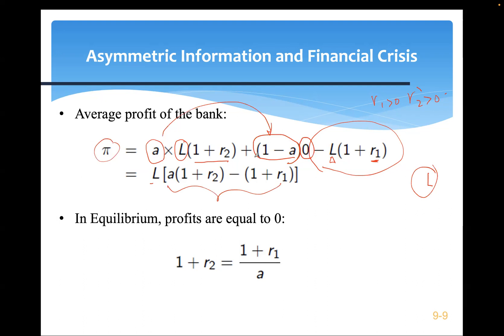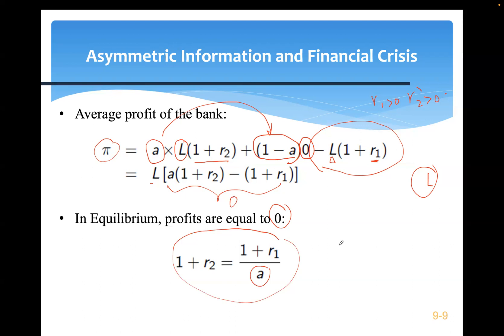If profit is positive, more banks will enter; if negative, banks will leave. This entry and exit drives profit to zero. Setting profit π = 0 gives us the equation: A(1+R2) = (1+R1). Since A is a fraction less than or equal to 1, this immediately implies R2 ≥ R1 — the borrowing rate is greater than or equal to the lending rate.